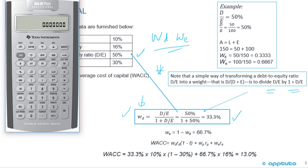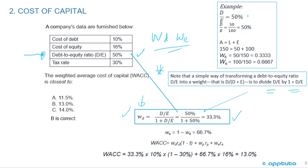Using the calculator: the debt-to-equity ratio is 0.5, divided by 1.5, gives 0.3333 — that's our weight of debt. Since there's no preferred in this case, it's just debt plus equity, so the weight of equity is 0.6667. Another way to verify: if debt-to-equity is 50%, put in real numbers — debt is 50 and equity is 100. Assets equal liabilities plus equity: 150 = 50 + 100. Weight of debt = 50/150 = 0.3333, weight of equity = 100/150 = 0.6667.